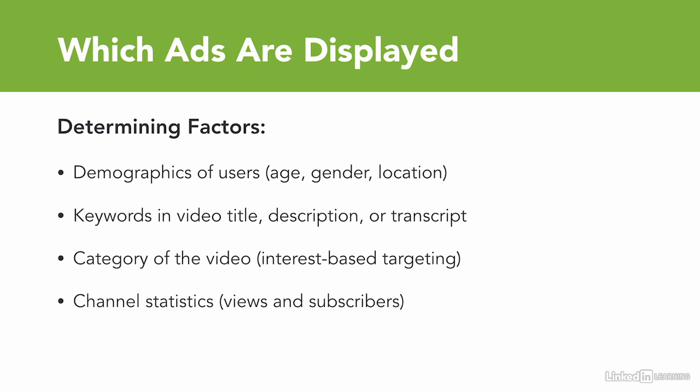Another factor that helps determine which ads are displayed are your channel statistics — the views and subscribers that you have on your channel. Some of the real high-profile advertisers that are paying a lot of money don't want to be featured on YouTube channels that only have 10 or 20 views and 3 or 4 subscribers. They want to be featured on channels that have millions of views and hundreds of thousands, if not millions, of subscribers. So as your channel grows and you receive more video views and subscribers, you should see the quality of advertisements increase, and in turn your revenue increase as well.